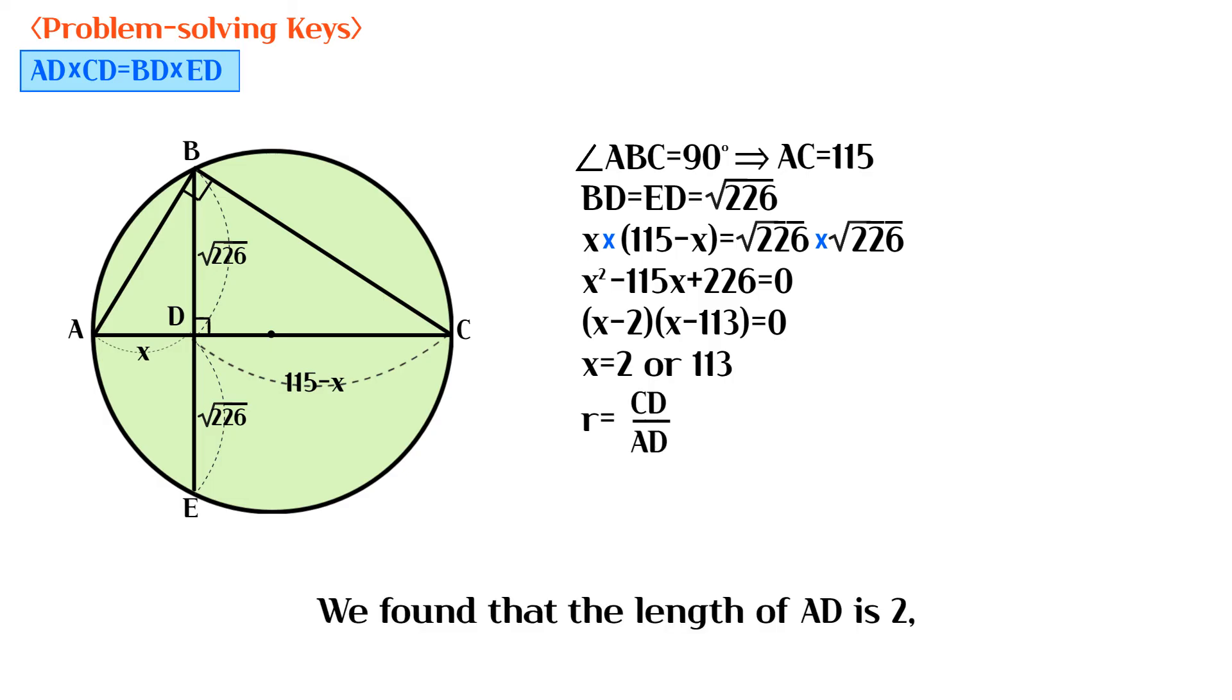We found that the length of AD is 2, and the length of CD is 113. Therefore, the value of R is 56.5.